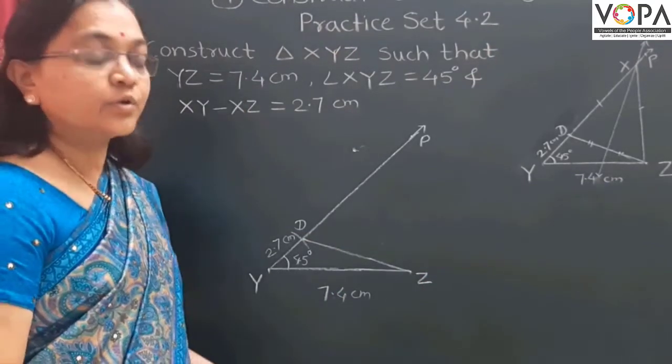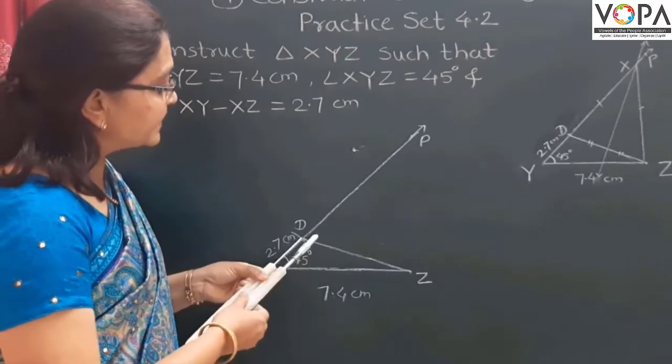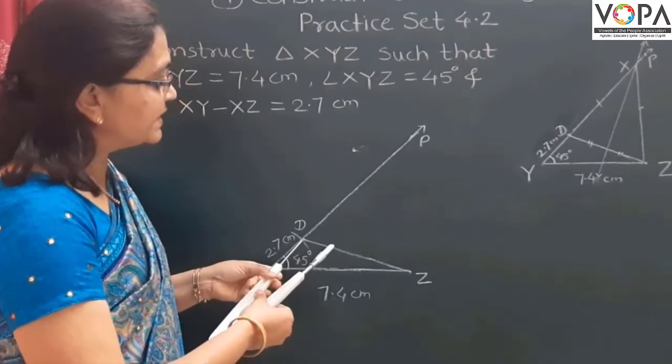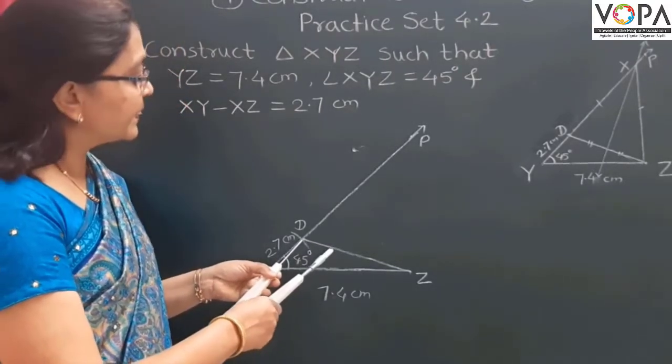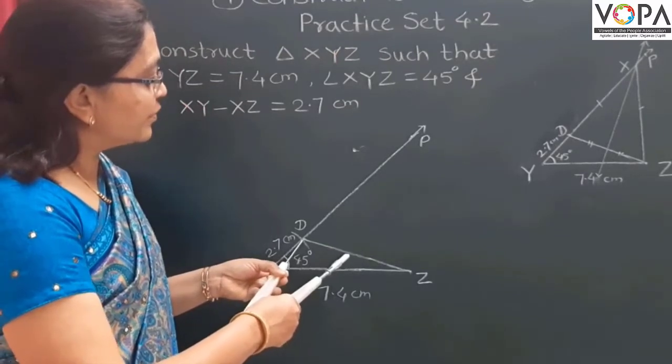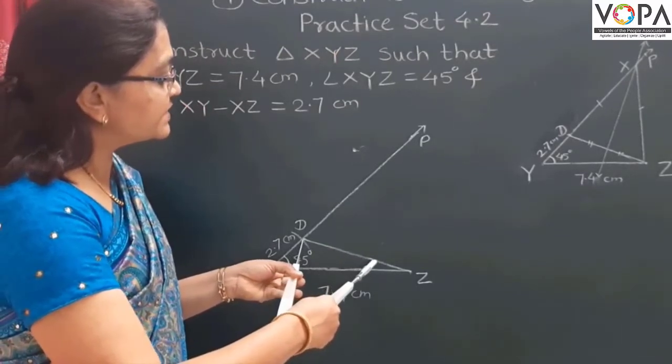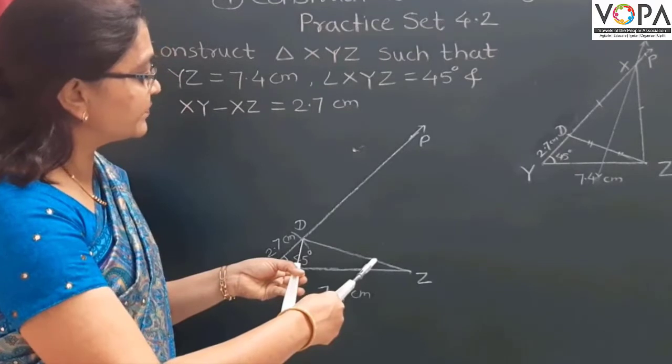Next step: draw the perpendicular bisector of segment DZ. For that, take more than half the distance in your compass, like this.